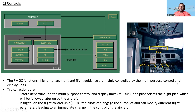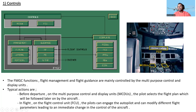Typical actions: before departure, on the Multipurpose Control and Display Unit (MCDU), the pilot selects the flight plan which will be followed by the aircraft. In flight, on the Flight Control Unit (FCU), the pilot can engage the autopilot and modify different flight parameters, leading to an immediate change in the control of the aircraft.